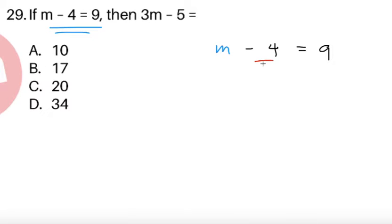So this negative 4, we can put it on the other side, so it's going to be plus 4, so we're going to have m equals 9 plus 4, so we're going to get m equals 13.